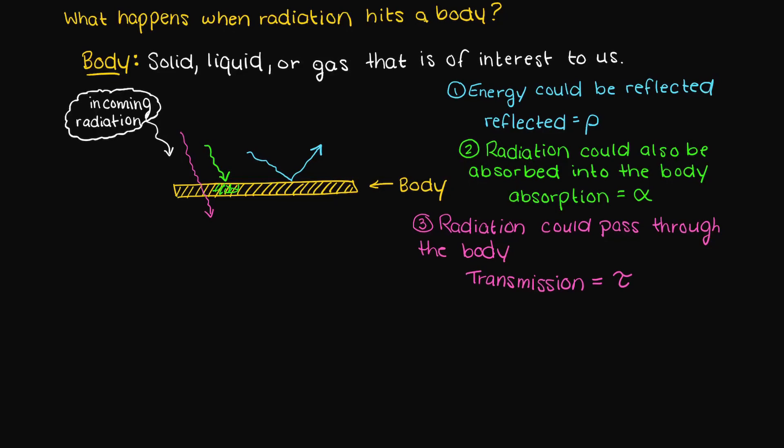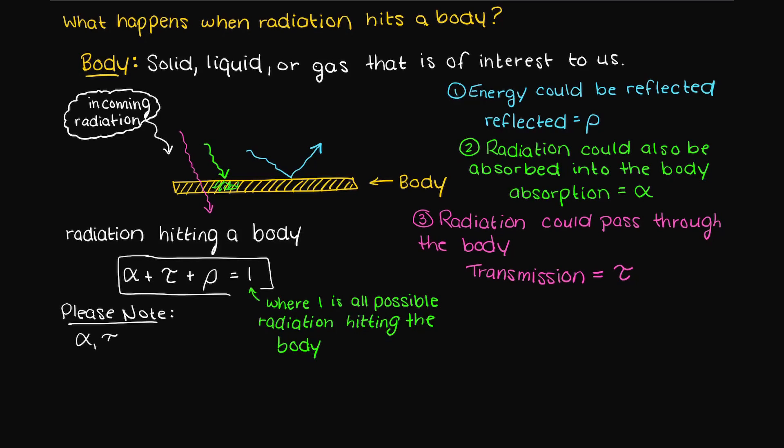Therefore, we can represent the radiation incident on a body using the following summation, which tells us that all the radiation that hits our body of interest must either reflect off, get absorbed, or pass through our body.